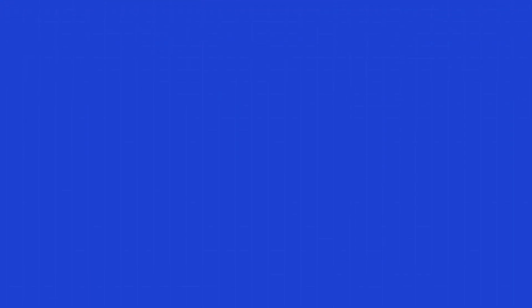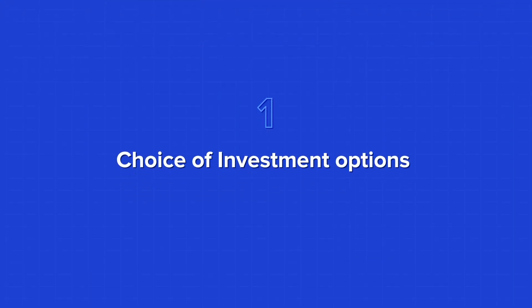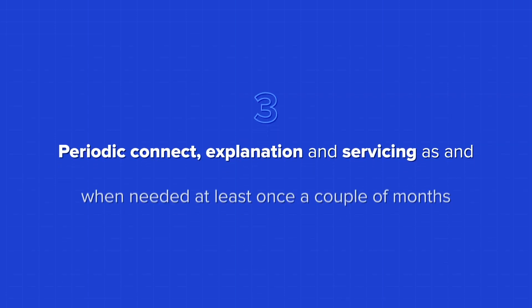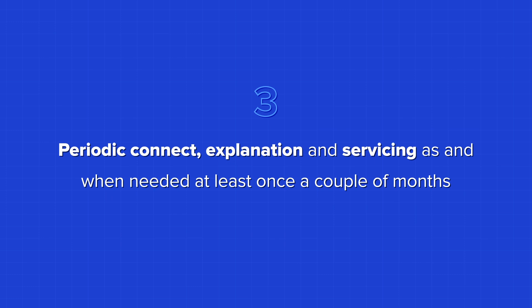But you need to also understand what you get in the regular option which you may not necessarily get in the direct option. Normally you will have the services of a distributor who will give you a choice of various investment products as per your needs. You will have a goal-based investment option suited to your risk appetite. These investments will also be followed up with a periodic visit or a call, or an engagement once in three or six months to ensure that they're performing in line with what's needed.